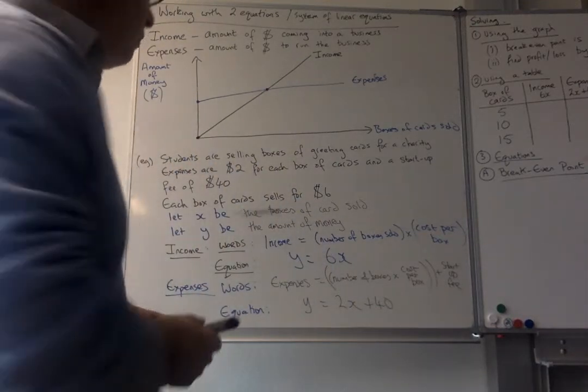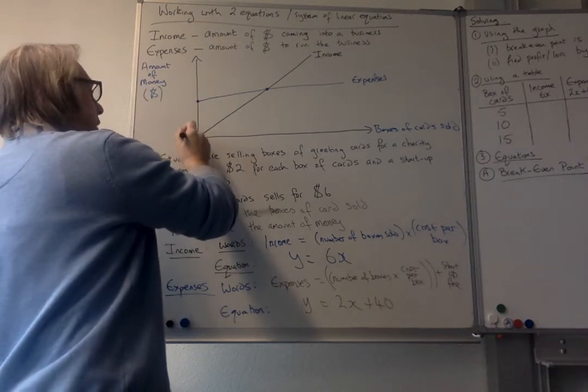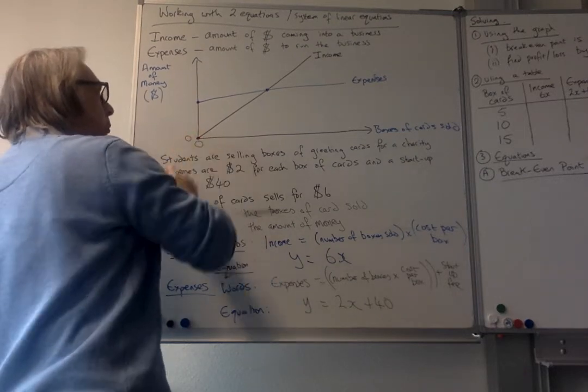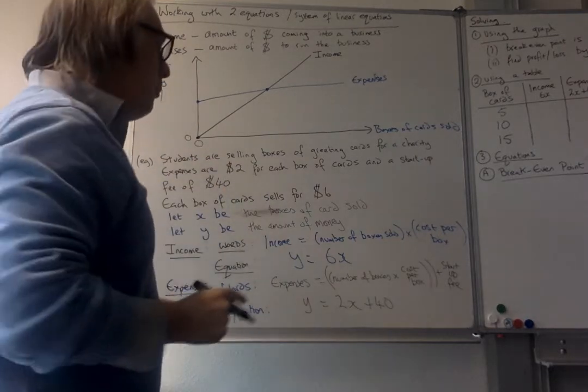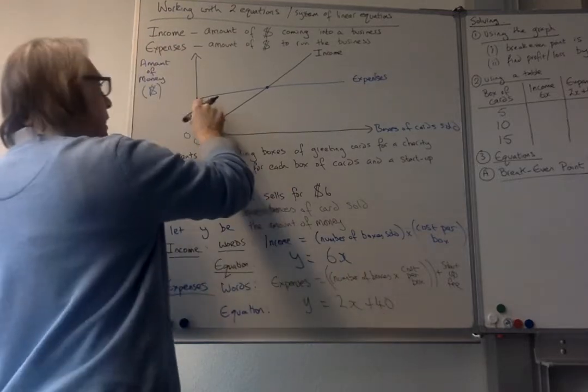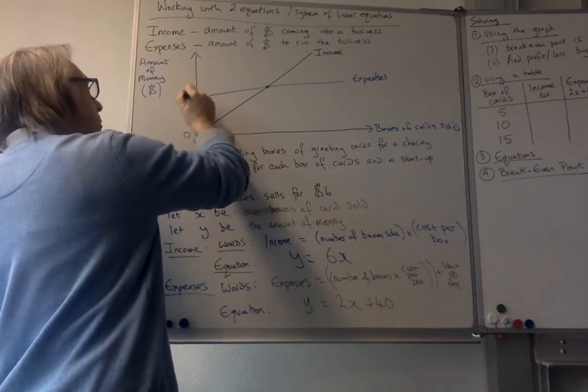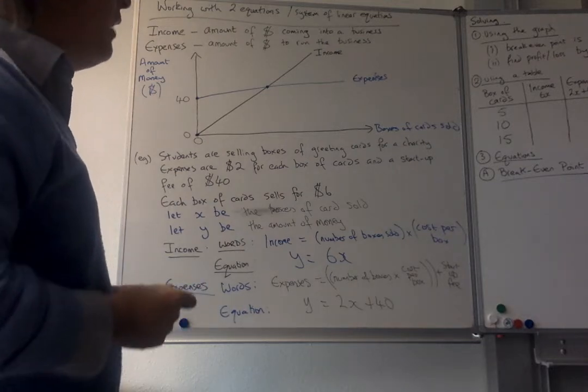So now I have my two equations. Okay. And then you would put those on your graph. Now this graph here, this point here is starting at zero and zero for the number of boxes, which makes sense. If you sell zero boxes, you're going to have zero income. But if you also sell zero boxes, there's a startup fee here. So this number here is 40. If you put that one on as well, that we know. Okay. And that's our setup so far.